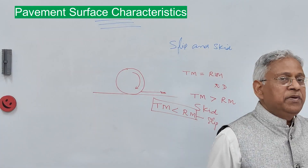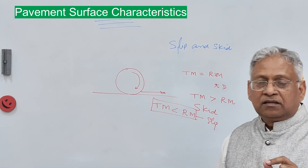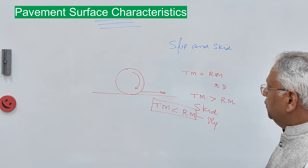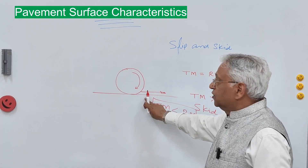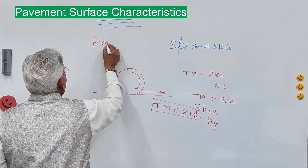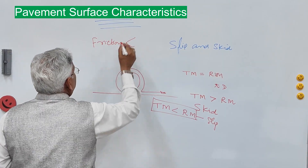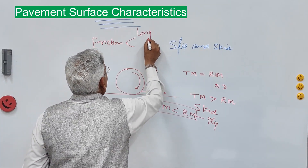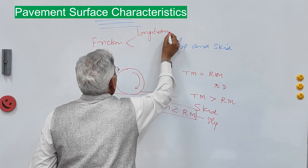In slipping and skidding, the major role is played by friction — friction between the tire and the pavement. So the second pavement characteristic is friction, and friction can be in two forms: in the longitudinal direction as well as the lateral direction.